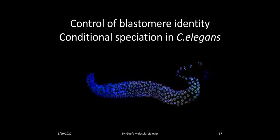Hey everyone, so today we are going to study about the control of blastomere identity. We'll be studying about conditional specification in C. elegans. If you have not yet seen the previous video where we talked about autonomous specification, I will link it in the description.